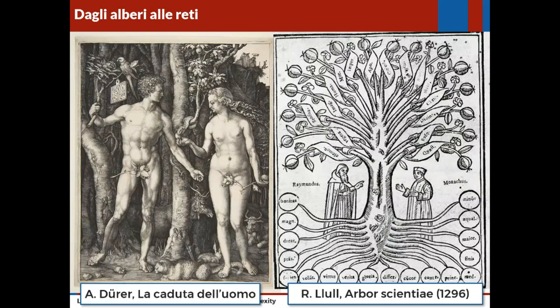Però facciamo prima un passo indietro. Per lungo tempo, nella storia dell'umanità, la metafora principale che abbiamo utilizzato per parlare di conoscenza è stata quella dell'albero. Pensate all'albero della conoscenza del bene e del male, o ancora nel Medioevo — qui c'è un esempio tratto da Raymond Lull — dove si parlava dell'albero della scienza, cioè la rappresentazione dei domini scientifici come una sorta di triangolo capovolto, con una ramificazione progressiva delle varie discipline scientifiche.